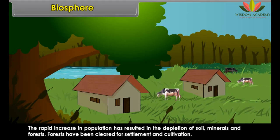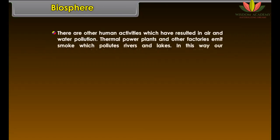The biosphere has a huge variety of organisms. The organisms vary in size, from the smallest grass to the tallest tree. Any change in the environmental conditions affects all forms of life. Animals and plants adapt themselves to the environmental conditions.